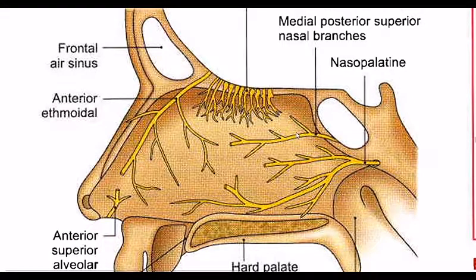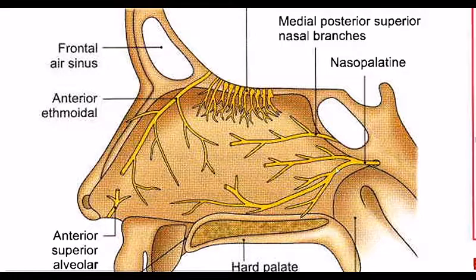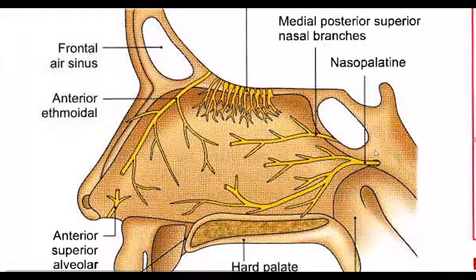The medial posterior-inferior nasal branch supplies the posterior inferior part of the septum. The main nerve for the posterior inferior part is the nasopalatine nerve, which is the main nerve supplying that region.